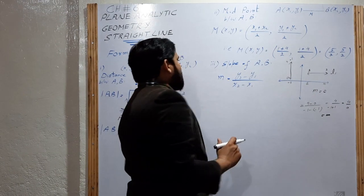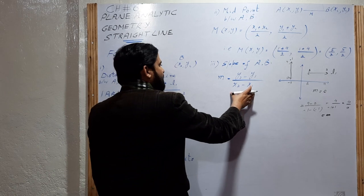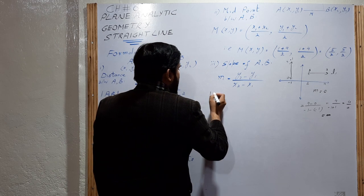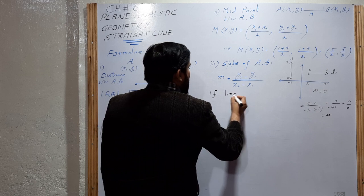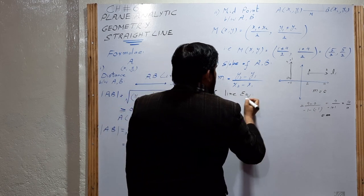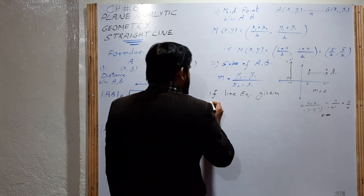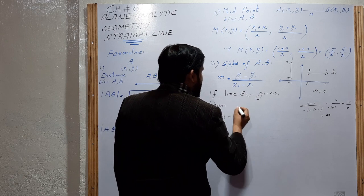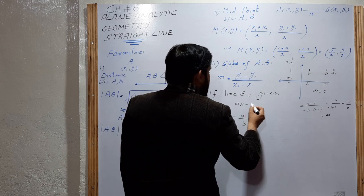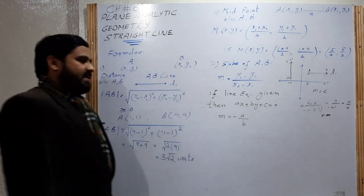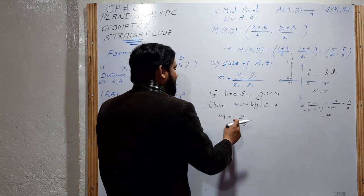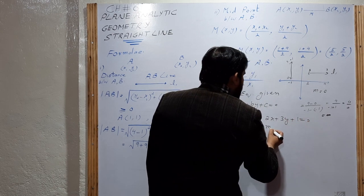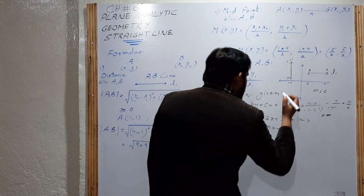For example, for the line 2x + 3y + 1 = 0, the slope is m = −2/3. The next formula is the angle between two lines L1 and L2. The formula is: tan θ = (m1 − m2) / (1 + m1·m2), where m1 is the slope of L1 and m2 is the slope of L2. After simplification, θ = tan⁻¹ of that value.